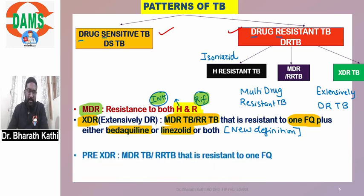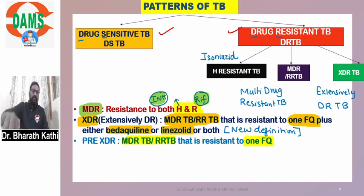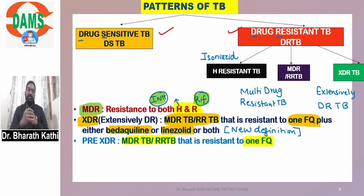Coming to pre-XDR-TB — a terminology that has recently come up because we are doing a lot of drug sensitivity testing. Pre-XDR-TB is an MDR or rifampicin-resistant TB that is resistant to one fluoroquinolone only. If resistance extends to one fluoroquinolone plus either bedaquiline or linezolid, or both, then it becomes XDR-TB.